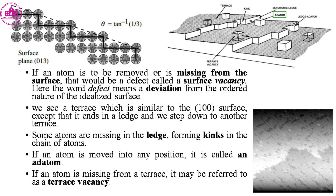Some atoms are missing in the ledge, forming kinks in the chain of atoms. If an atom is moved into any position, it is called an adatom. If an atom is missing from a terrace, it may be referred to as a terrace vacancy.